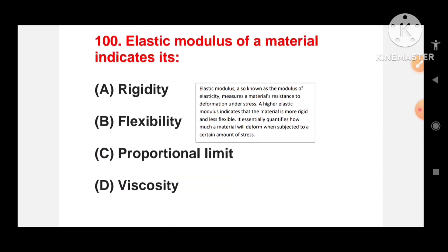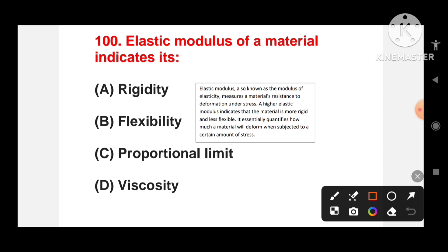Elastic modulus of a material indicates its rigidity, flexibility, proportional limit or viscosity? The elastic modulus of a material indicates its rigidity. Elastic modulus, also known as modulus of elasticity, measures the material's resistance to deformation under stress. A higher elastic modulus indicates that material is more rigid and less flexible. It quantifies how much a material will deform when subjected to a certain amount of stress.